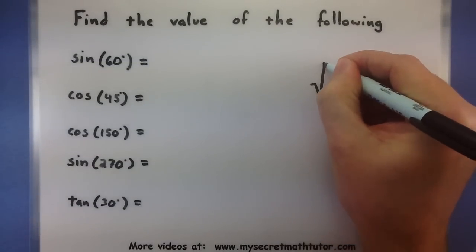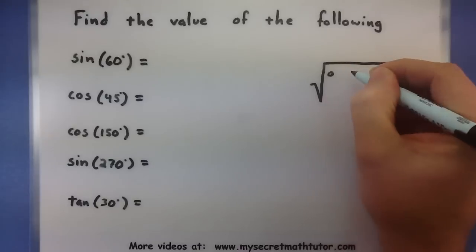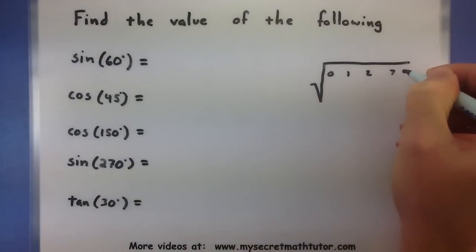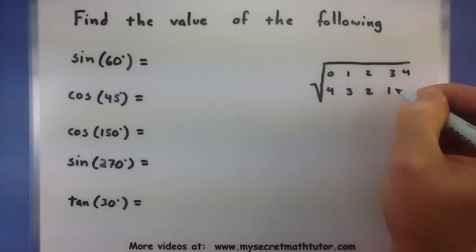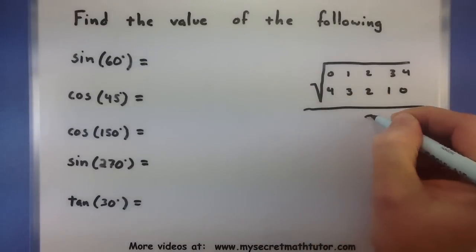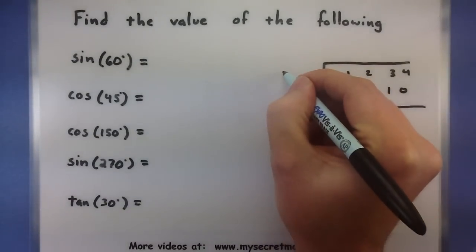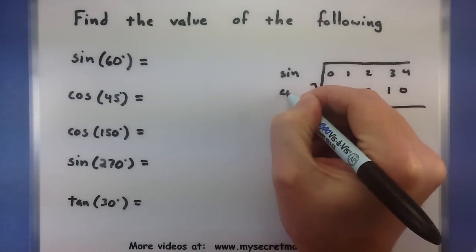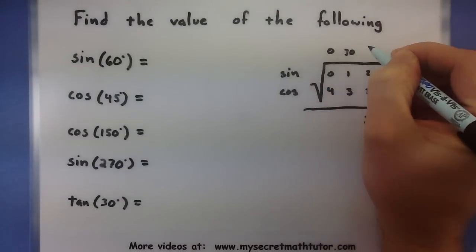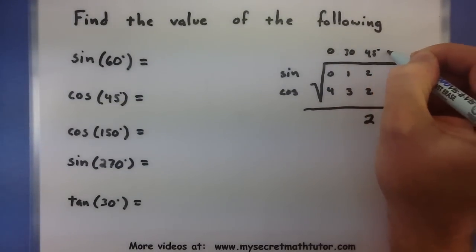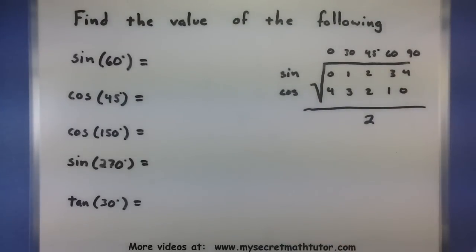All right, so remember, giant square root. 0, 1, 2, 3, 4. 4, 3, 2, 1, 0. All over 2. First row is sine, next one is cosine, and of course these are my key angles of 0, 30, 45, 60, and 90. All right, now that I have this on the page, it will be really easy to figure out all of these values.